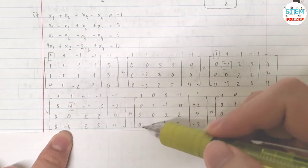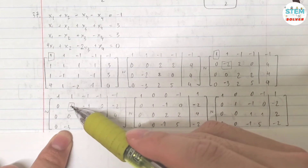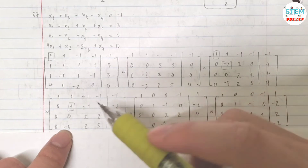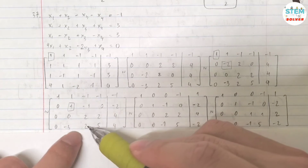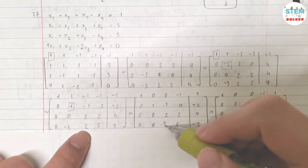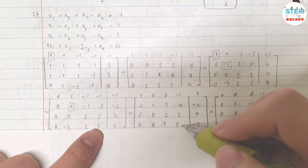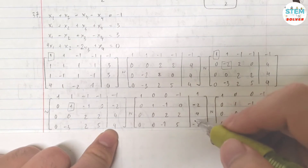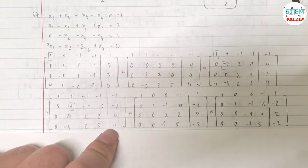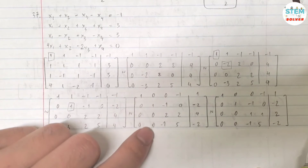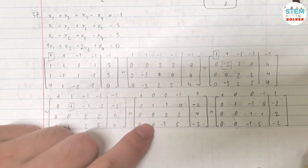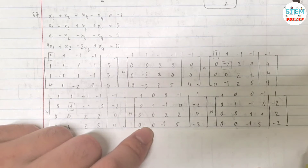Continuing the fourth row operation (3 × second row added to fourth row): 3×0 + 0 = 0, 3×1 − 3 = 0, 3×(−1) + 2 = −1, 3×0 + 5 = 5, and 3×(−2) + 4 = −2. So the new fourth row is: 0, 0, −1, 5, −2. We now have 1s on the diagonal with all zeros above and below those pivots in the first two columns.